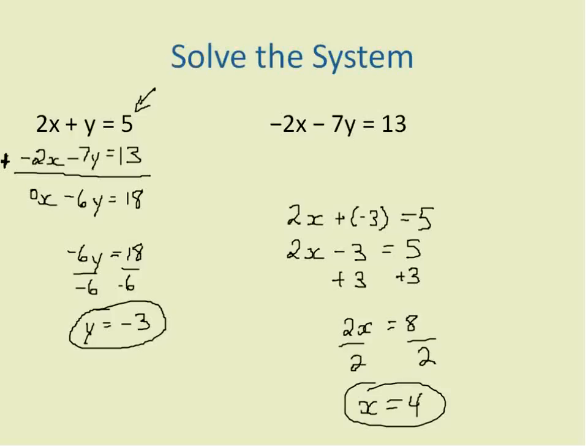So the place where these two lines meet is the location 4, negative 3. My x value is 4, my y value is negative 3. And that's how we solve a system of linear equations using the combination method. I'm going to show you another example.